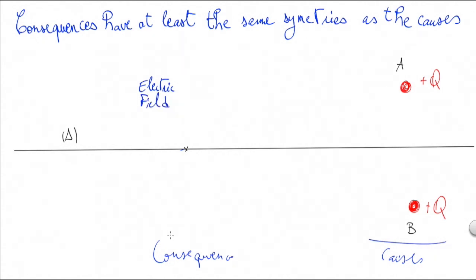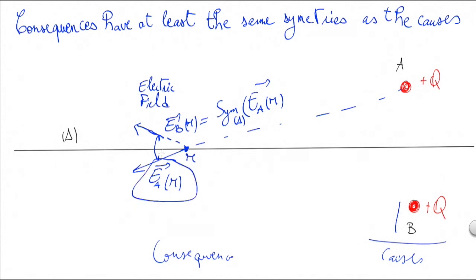And what the symmetry principle tells us is that if we want to calculate Eb, for example, we only need to calculate Ea. So if Ea is the field created in this point n by the charged ball A, we know for sure that Eb will be the exact symmetric of Ea and n by the axis delta. So if we manage to calculate Ea, we don't need to do further calculations to have Eb. We only rely on symmetries to have the rest.